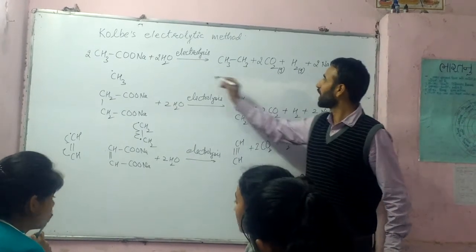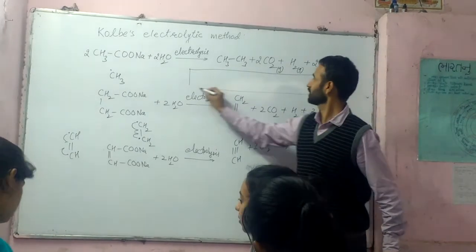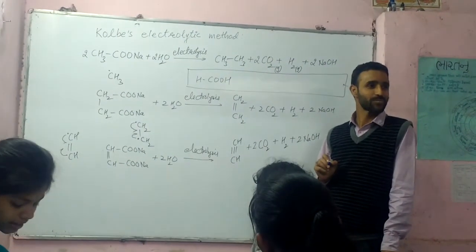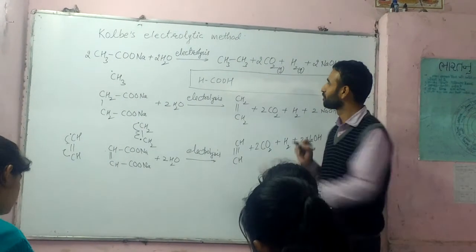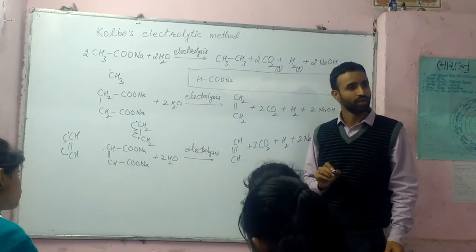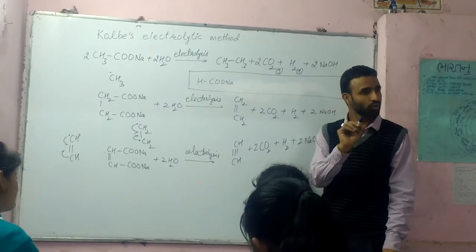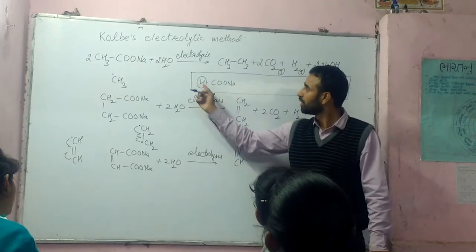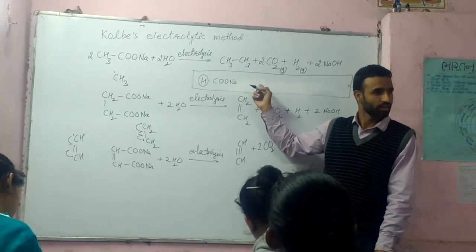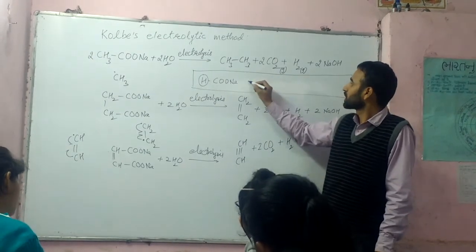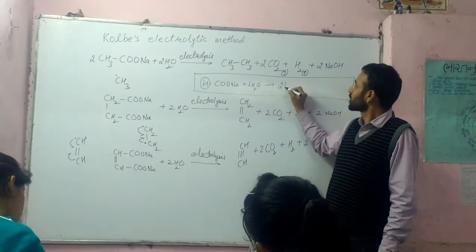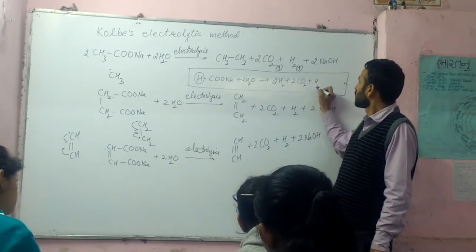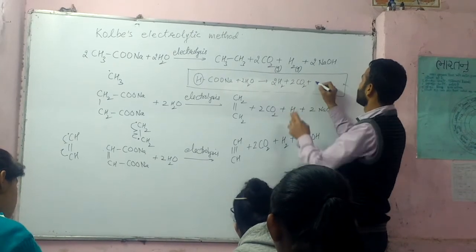Now, if we have formate (HCOO⁻), the product is H₂. H₂ gas is found at the cathode as well as the anode, because H is formed as a free radical first at the anode. We get H₂ gas at the anode, and from the normal mechanism, also at the cathode. So in this case we get two molecules of H₂ gas, along with carbon dioxide.